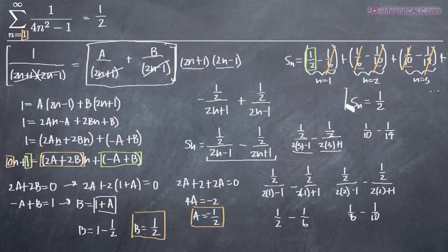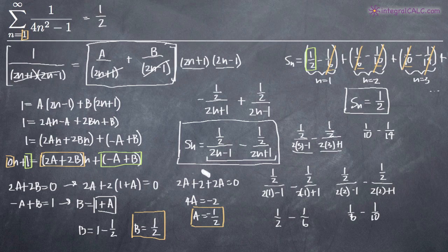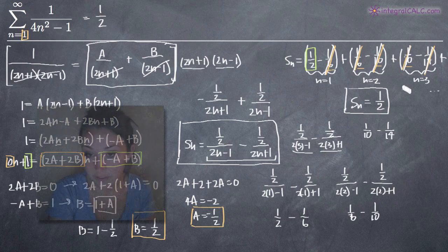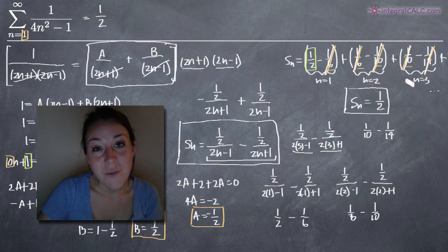That's our final answer — the sum of this telescoping series is 1 half. Remember, it's really just a matter of performing your partial fractions decomposition, setting up S sub n with your constants, then plugging in values for n. You see that the series breaks out so that all terms cancel except the very first one, which in this case is 1 half. I really hope this video helped, and I'll see you in the next one!